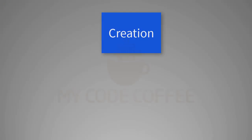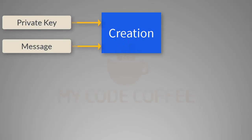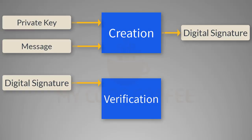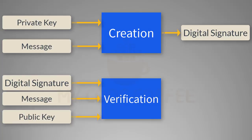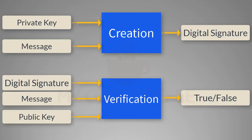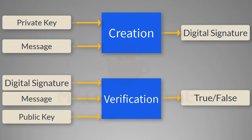A digital signature is created with the help of a message and a private key as inputs, then some process is done and the result is a digital signature. For verification, you need the digital signature, the message, and a public key generated from the same private key. The result is either true or false depending on whether the digital signature is valid or invalid. Importantly, the digital signature is a function of both message and private key, so if the message changes, the digital signature also changes — very different from pen and paper signatures.